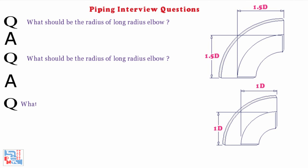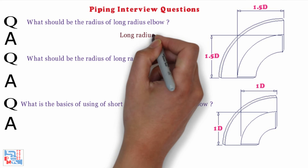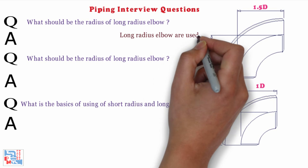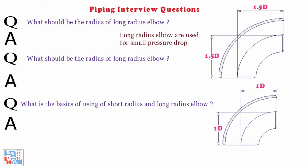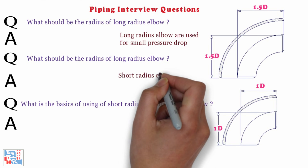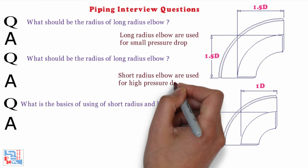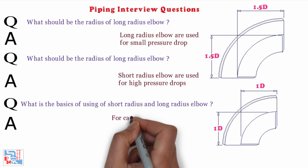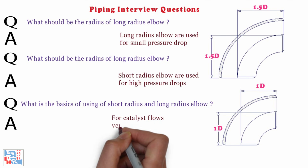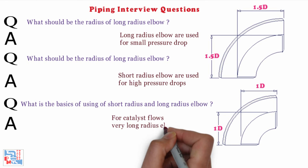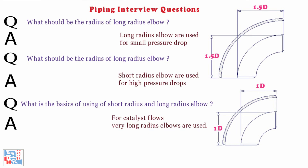Next, what is the basis for using short radius and long radius elbows? Long radius elbows are used for small pressure drop, whereas short radius elbows are used for high pressure drops. For catalyst flow, very long elbows are also used.